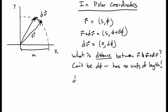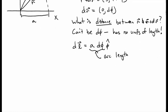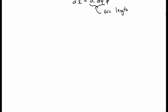So we need to be a little bit more careful. What we really mean is dl vector, the distance between these two points, is s dphi times phi-hat. s dphi is, of course, just the arc length, and that's where we get this from. So we have to use this as what we mean by displacement or distance.